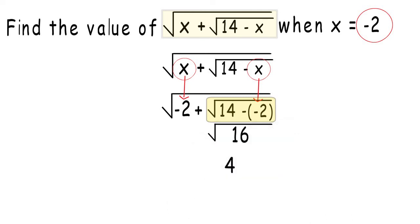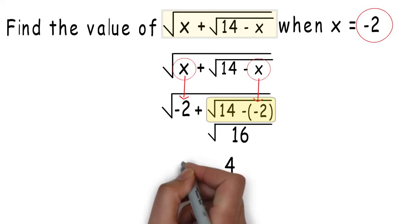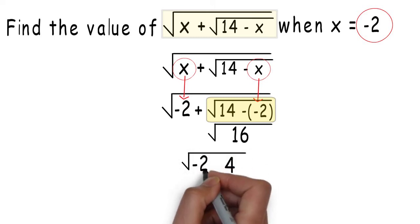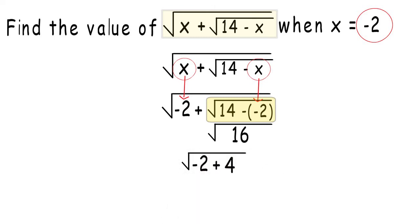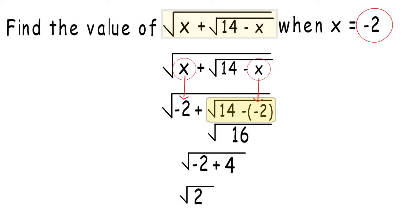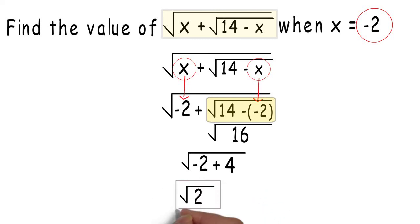Then, the square root of negative 2 plus 4 is equal to the square root of 2. So our final answer is square root of 2.